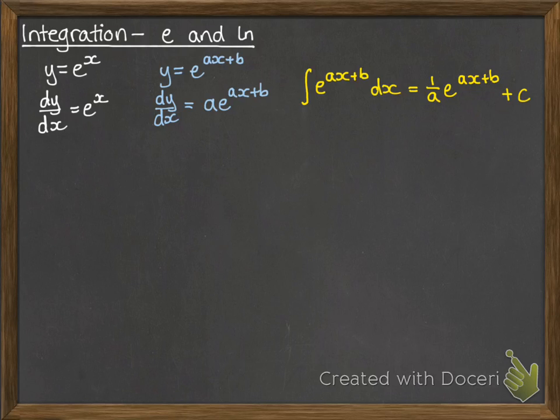So instead of when you differentiated and multiplied by a, when you integrate you divide by it — and then don't forget your plus C at the end.